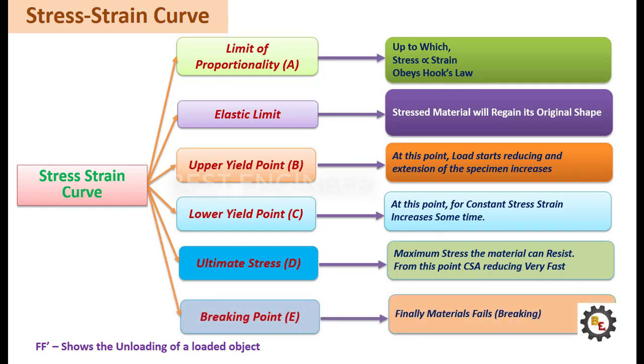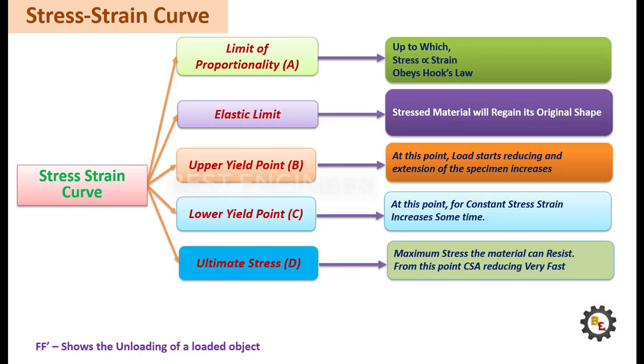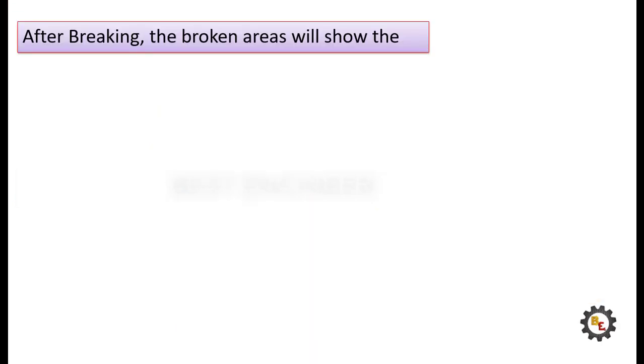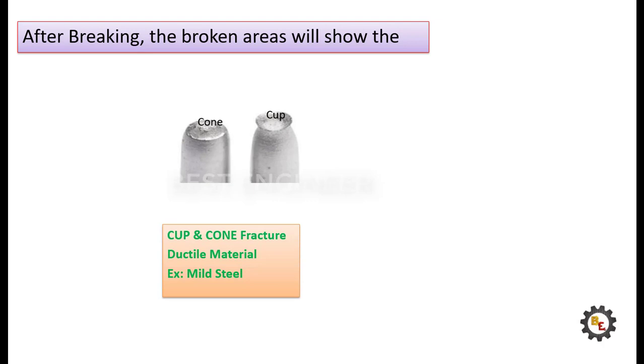Point E, specimen gets break. The point FF shows the unloading behavior. Let us see the breaking nature of material. For ductile material such as mild steel, cup and cone fracture will be appeared at the fractured surface.